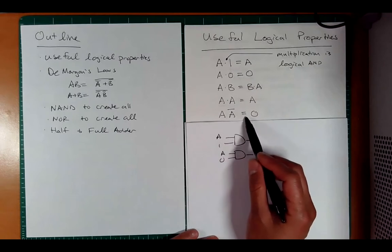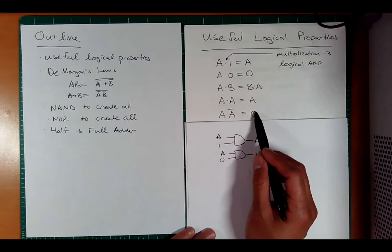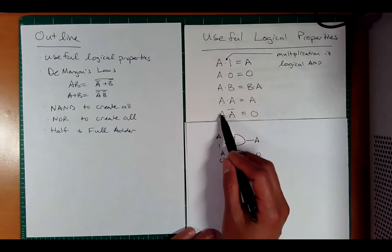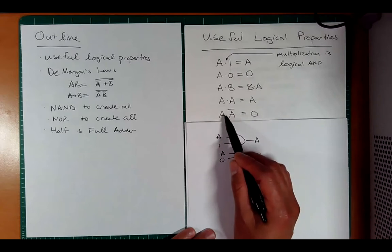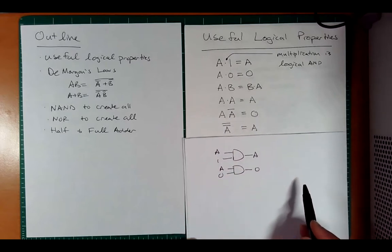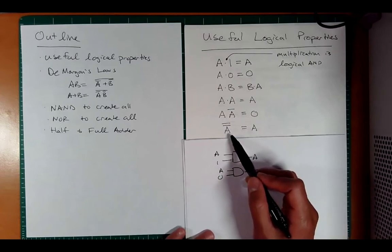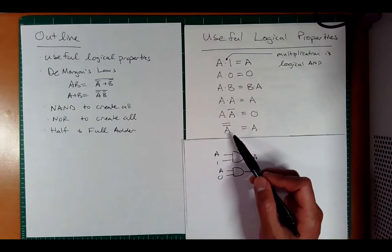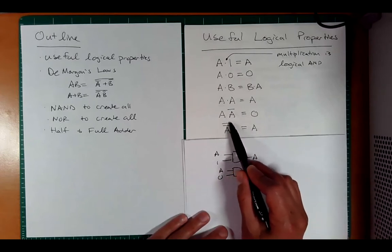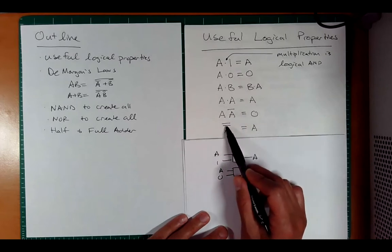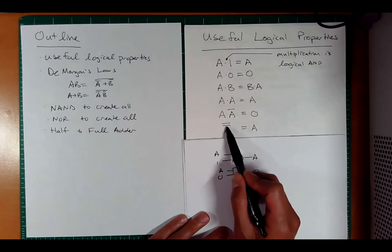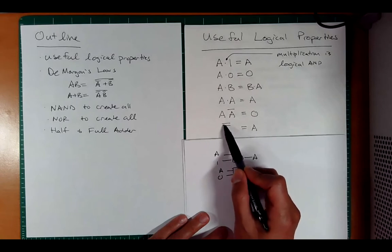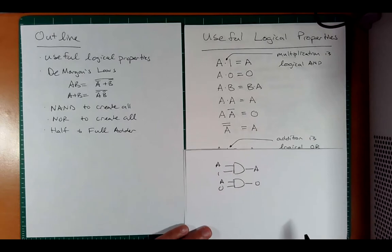If you AND a signal with its inverse, you always get 0. If A is 0 and you AND it with 1, that's false; if A is 1 and you AND it with 0, that's also false. Another property: if you double-invert a signal, you get the same answer. If A is 1, invert once to get 0, invert again to get 1.